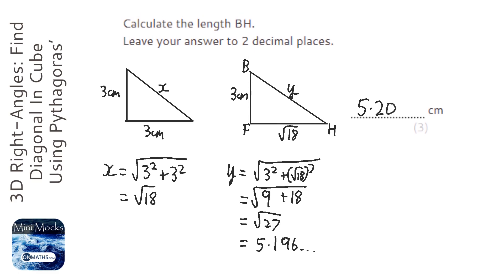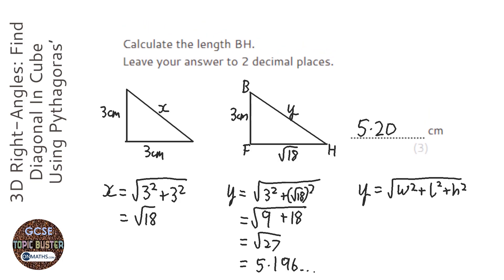Now you might notice that actually there's another equation for this. To work out what Y is, it's the square root of the width squared plus the length squared plus the height squared, which is just an interesting formula. So if you square the 3, add the 3 squared plus the 3 squared, it will equal 27, square root 27 gives you the same answer.